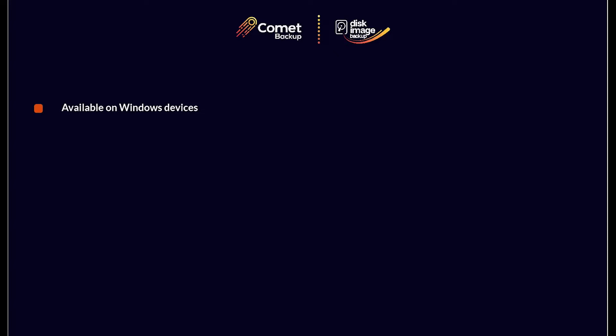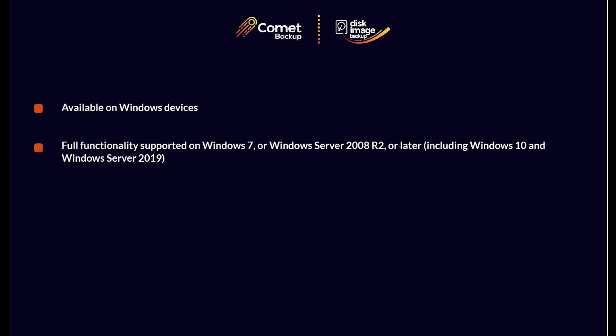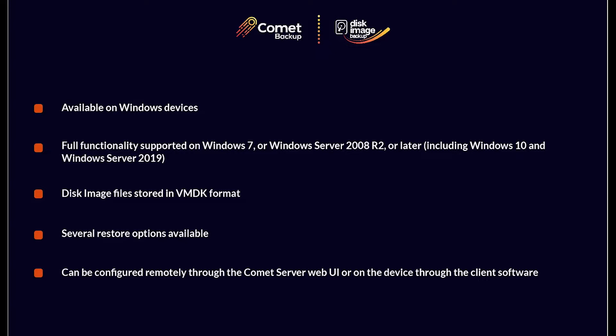With Comet, you can backup disk image on Windows devices with full functionality supported on Windows 7 or Windows Server 2008 R2 and later. Comet will store the disk image files in VMDK format, which can be restored onto physical hardware, a virtual machine, or a cloud environment. There are several ways that you can restore a disk image backup, which I will show you later. You can configure a disk image backup and perform a restore either from the Comet server's web UI or through the client software. We will cover both interfaces in this video.